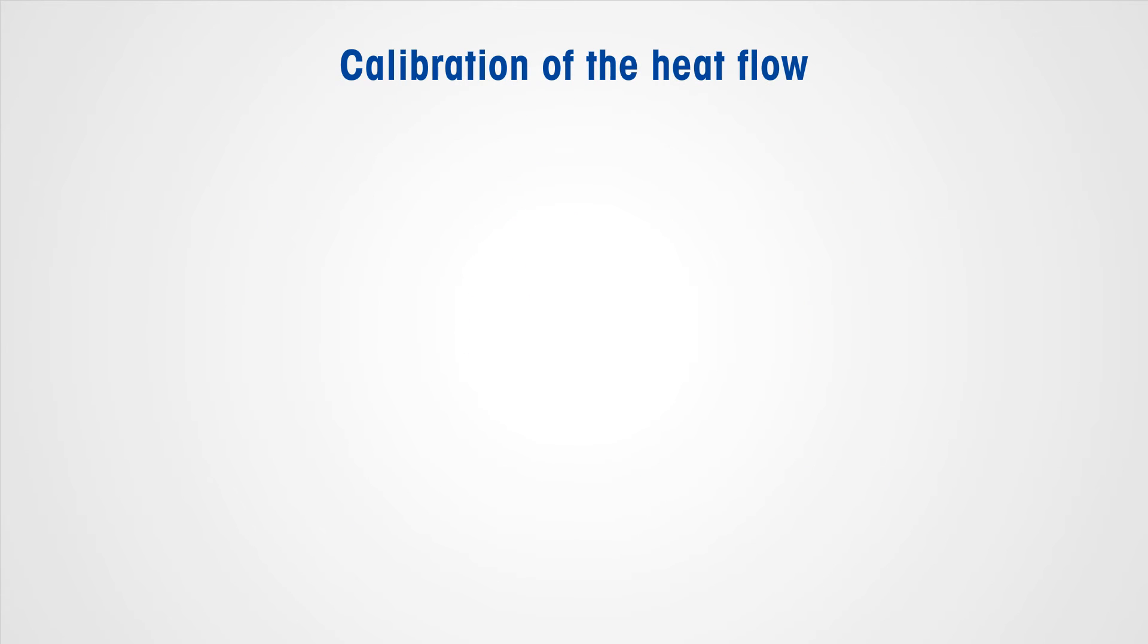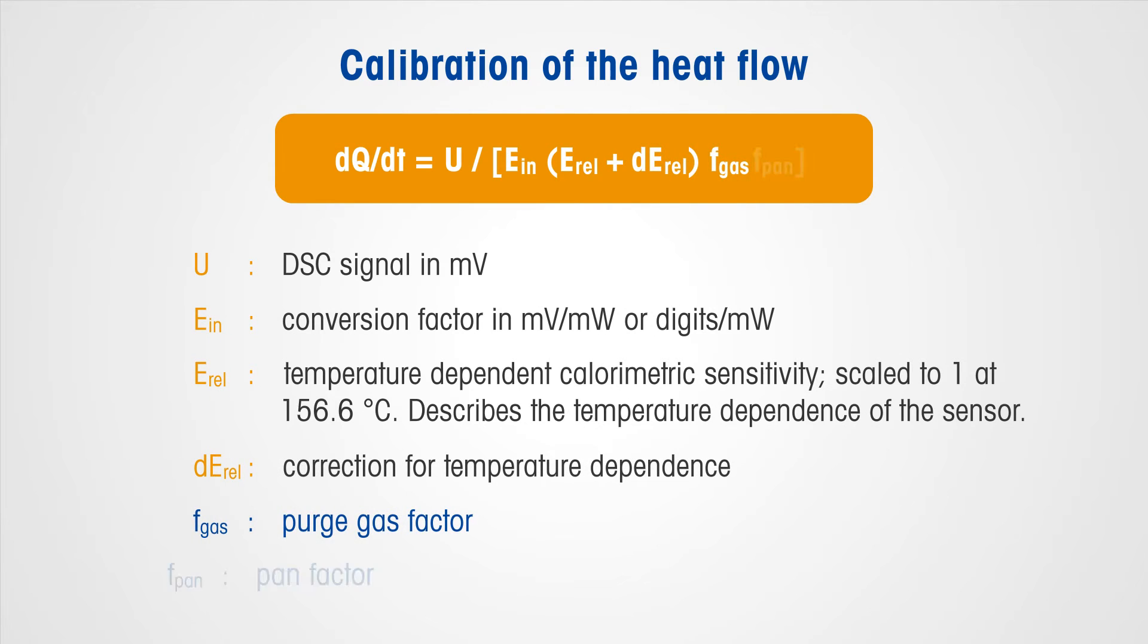FlexCal is a unique technology which corrects the adjustment parameters automatically depending on crucible and gas used. As a result, enthalpy and temperatures are correct for isothermal measurements as well as for dynamic measurements with different heating and cooling rates.